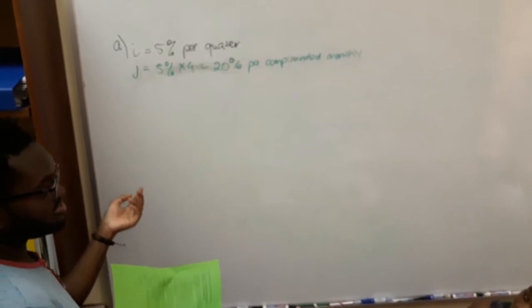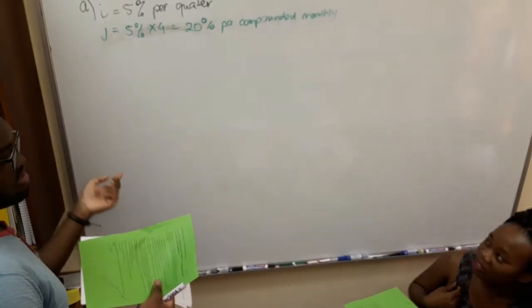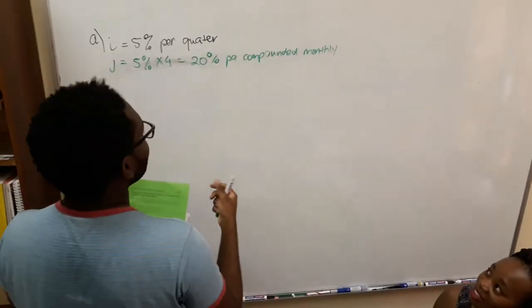So you mean we have to multiply the interest with the compounding period? Yes, in order. That's how, that's what I was doing now. Sure.